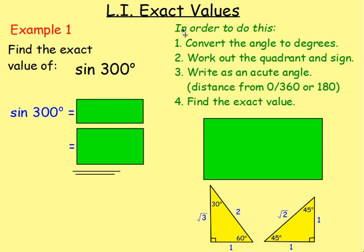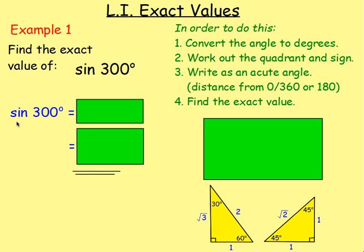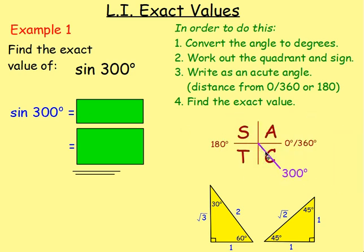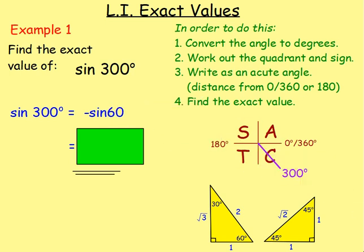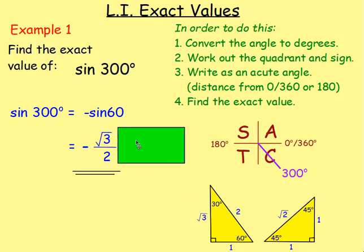Find the exact value of sine of 300. It's already in degrees. Using the CAST diagram, 300 is in the fourth quadrant — that's C — and sine there is negative. The acute angle is 60 degrees away from 360. So it's negative sine 60. Thinking about the triangle: sine of 60 is opposite over hypotenuse, which is root 3 over 2. So the answer is negative root 3 over 2.